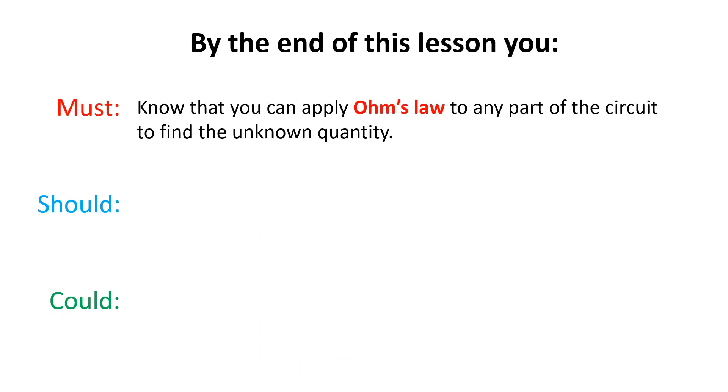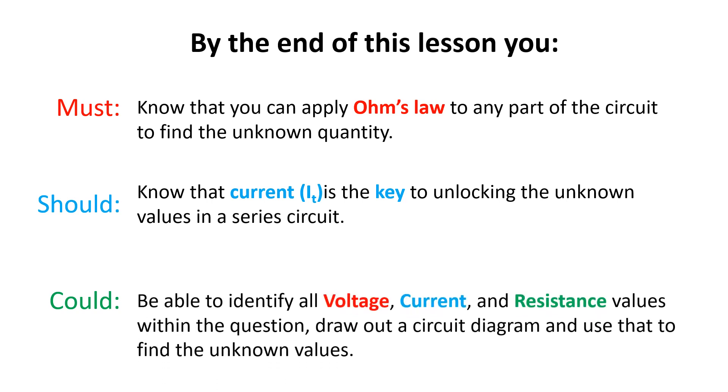By the end of this lesson you must know that you can apply Ohm's law to any part of the circuit to find the unknown quantity. You should know that the current flowing in a series circuit is constant and as such I will refer to the current total or IT and that is the key to unlocking all the other values within the circuit. Some of you could be able to identify all voltage, current and resistance values within the question and be able to draw out a circuit as shown in this video series.